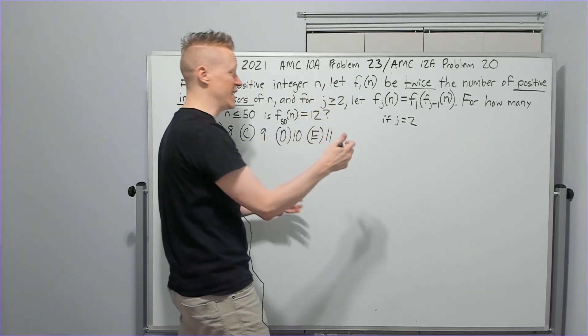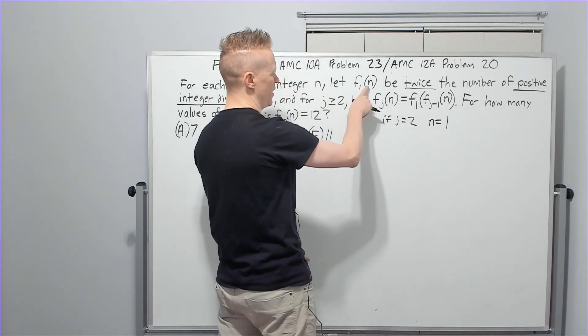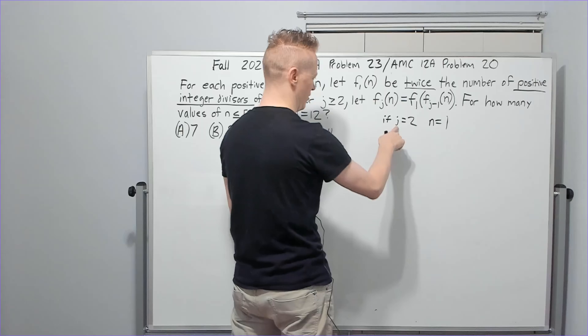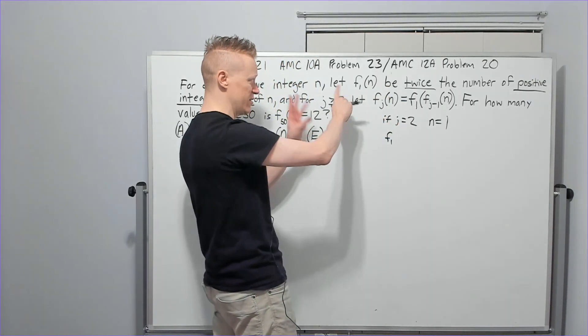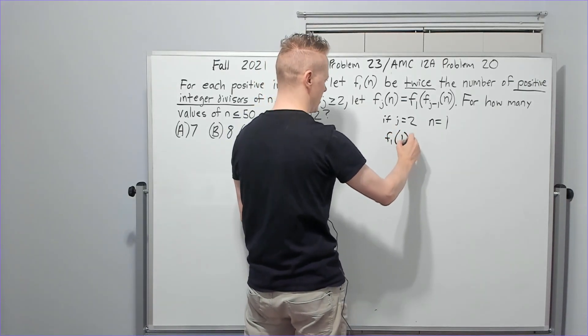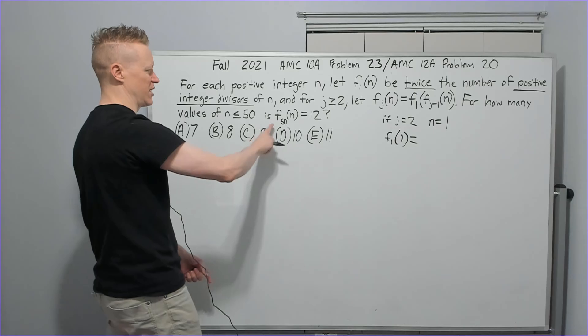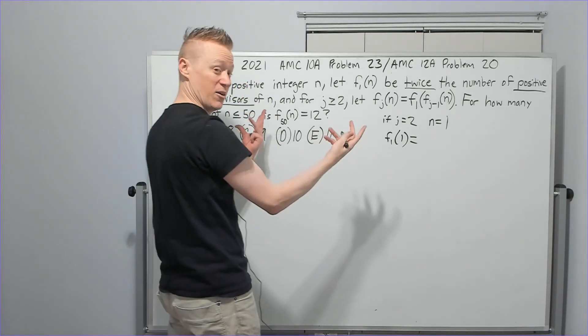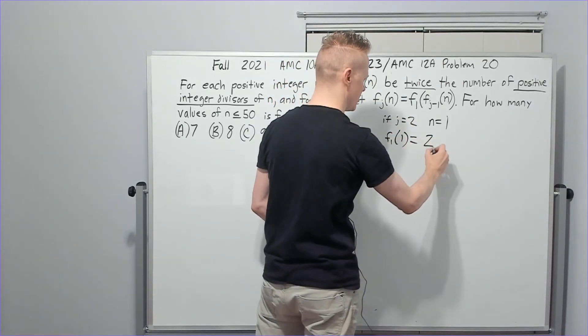So I'm going to pick the smallest positive integer n equals 1. So now I've got f sub 1 of 1. Let's just do that. I don't know whether j is going to come in yet. Don't think about the j. We picked it, but don't think about it. Just go here and do what it says. All right, f sub 1 of 1. This is twice the number of positive integer divisors of 1. Just replace the n with 1 now, because now it's 1. And that's going to be, well, there's one divisor of 1, so it's 2.